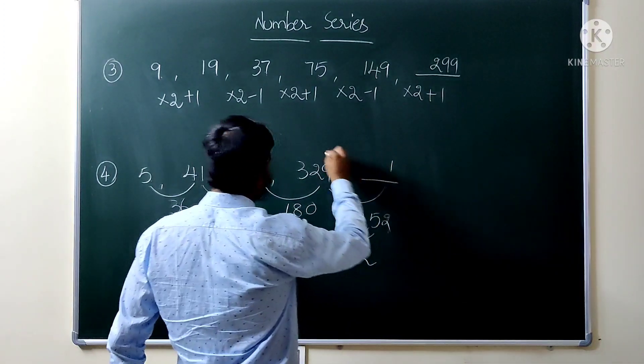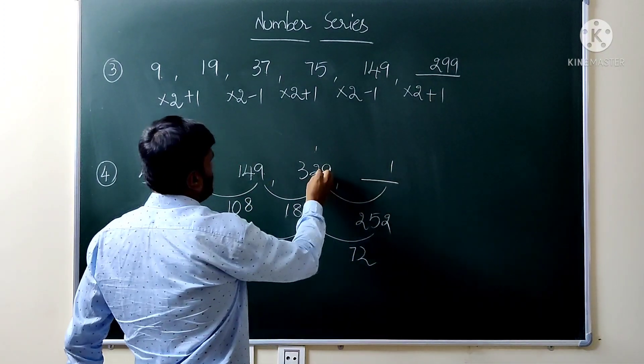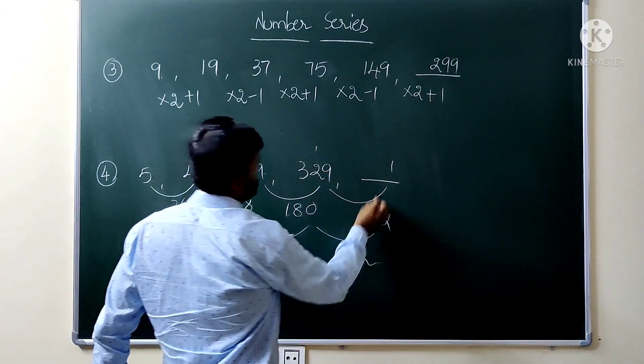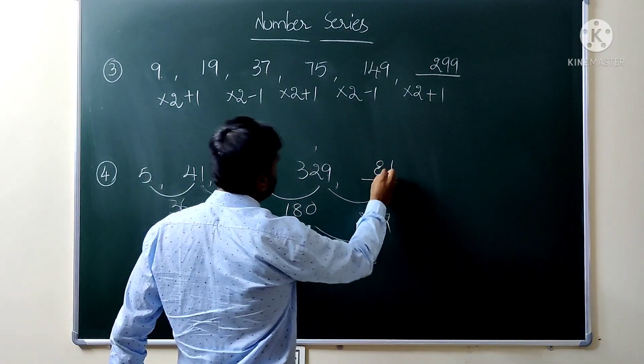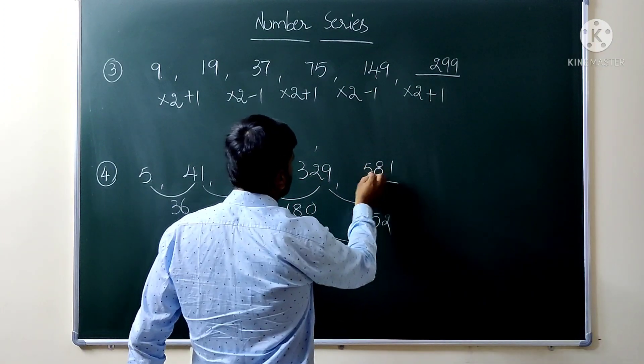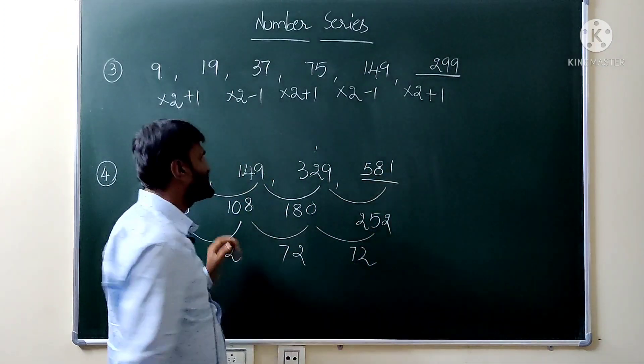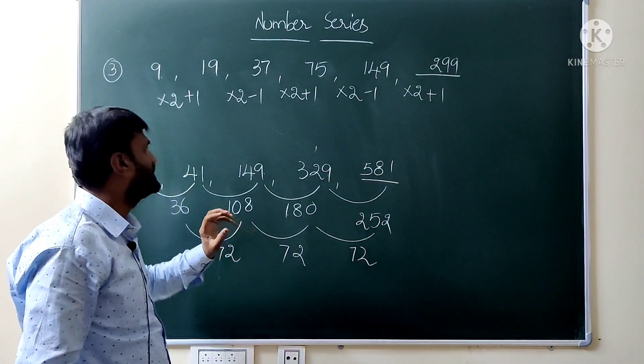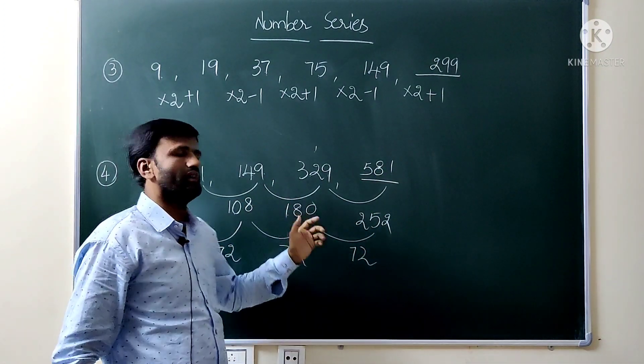So: 5 plus 36 is 41, 41 plus 108 is 149, 149 plus 180 is 329, 329 plus 252 is 581. So the required answer is 581.